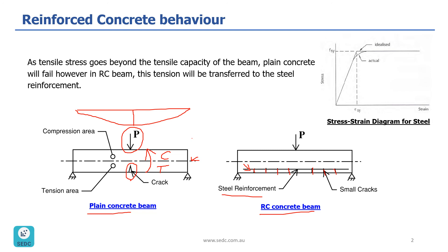If you want to know how the stress-strain diagram looks for steel, you can see it here. The diagram looks very simple — it just has two different parts — and it's a lot more predictable than what we've seen for concrete, because steel is a much more predictable material than concrete.